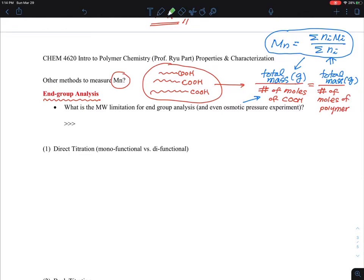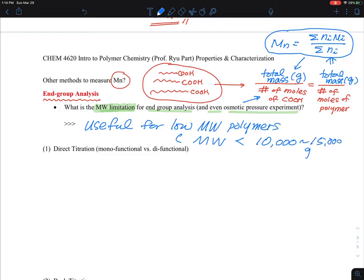Let me talk about molecular weight measurement limitation for end-group analysis. This is true for osmotic pressure experiment too. Osmotic pressure and this experiment all rely on counting the numbers, and it's only useful for low molecular weight polymers. Typically, what I mean is your molecular weight is something in the range of 10,000 gram per mole to, let's say, 15,000 gram per mole at max. If somebody says I measure the number average molecular weight using end-group analysis or osmotic pressure and that molecular weight is 1 million, that is very doubtful, unreliable data.